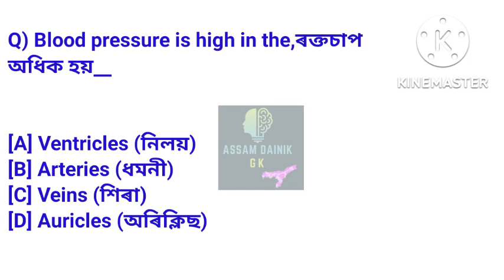Blood pressure is high in which part? Answer: Arteries. Blood pressure is highest first in the arteries.